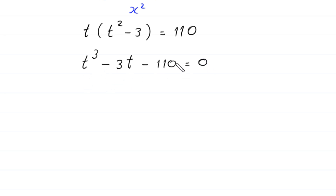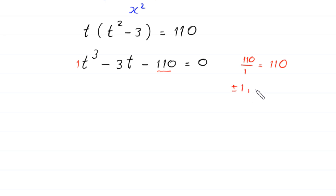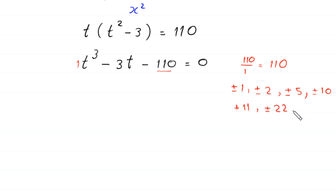This is a cubic equation. If we divide the constant 110 by the leading coefficient 1, we get 110. The factors of 110 are ±1, ±2, ±5, ±10, ±11, ±22, ±55, and ±110.